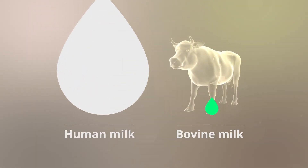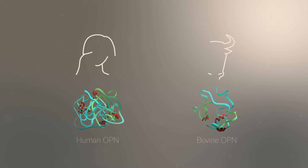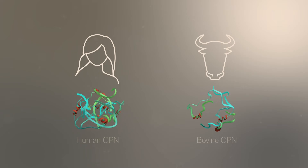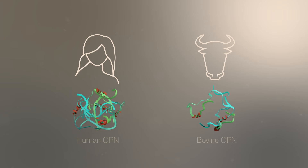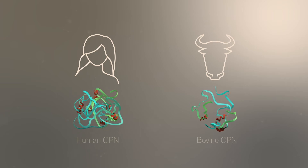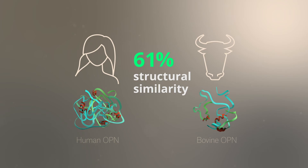Bovine milk also contains OPN, but at a concentration around 7 times less than in human breast milk. Although bovine osteopontin has a shorter chain-length structure when compared to its human counterpart, bovine and human OPN share a 61% structural similarity and therefore can exert similar functions.